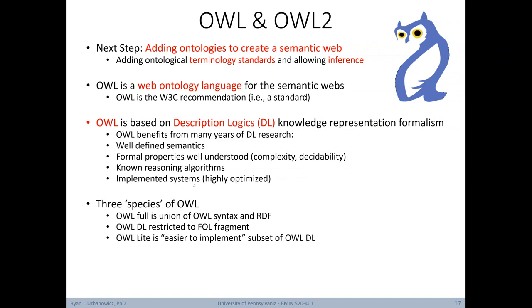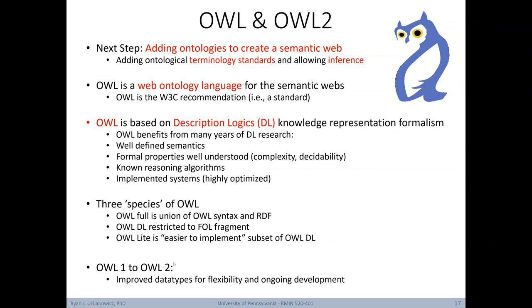Presently there are three species of OWL. The first, OWL Full, is a union of OWL syntax and RDF. Then there's OWL DL, a variant restricted to first-order logic. And lastly, OWL Lite, an easier-to-implement subset of OWL DL. There's also a new version, OWL 2, which has improved data types for flexibility and ongoing development.